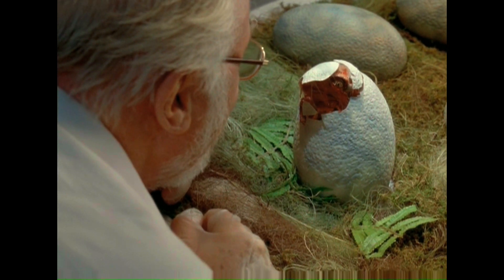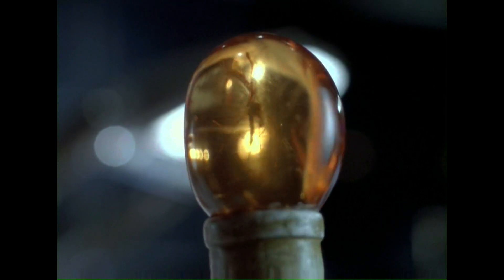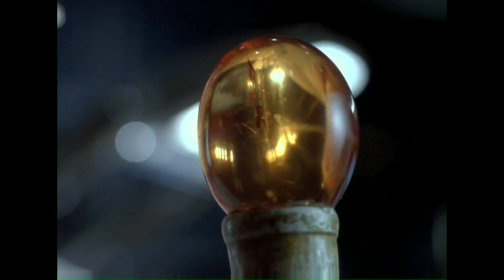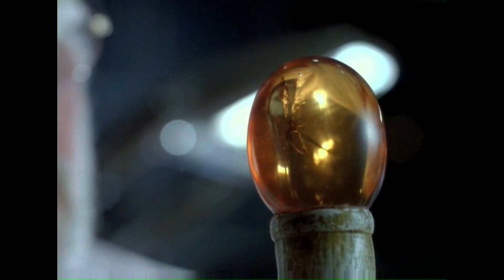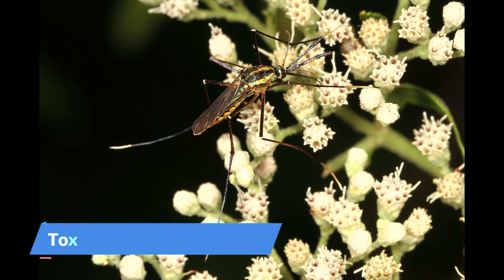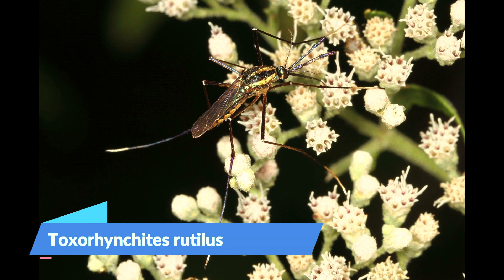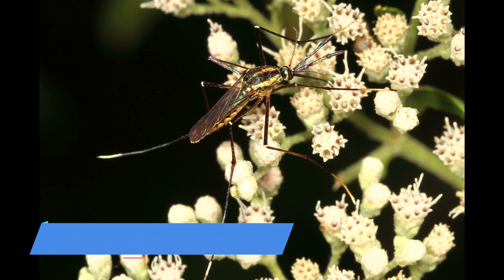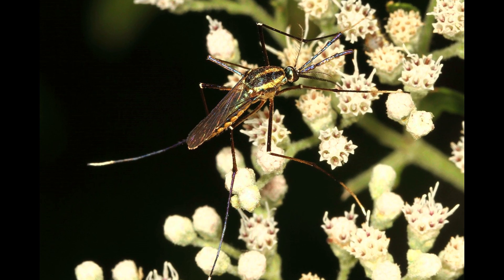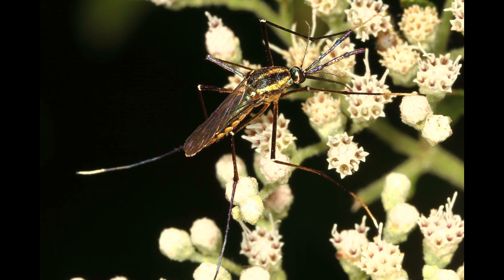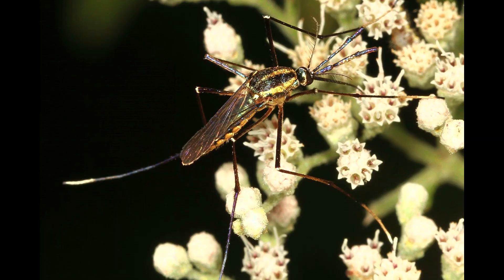Funnily enough, the insect used in the doctor's amber cane is a real mosquito called Toxorhynchites frutillus, or elephant mosquito. This is the only type of mosquito that doesn't feed on blood — they hunt other mosquitoes. But that's not the point of the video.